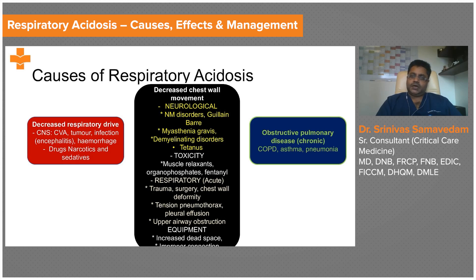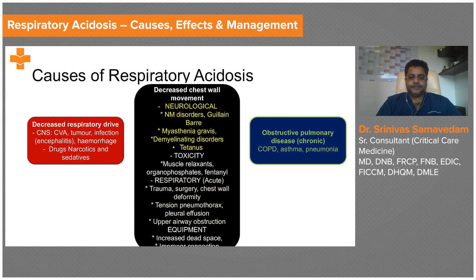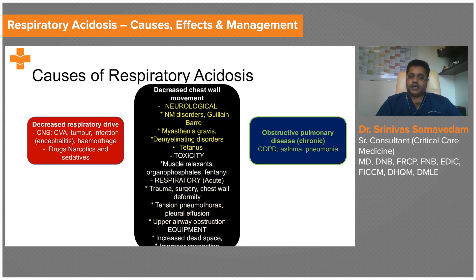Chest wall movement can be impaired by neurological problems like neuromuscular diseases — Guillain-Barré, myasthenia gravis, demyelinating disorders, or tetanus where the neuromuscular junction is affected. Muscle relaxants given out of proportion to the patient's body weight could also cause neuromuscular failure, as can organophosphate poisoning and opioids.